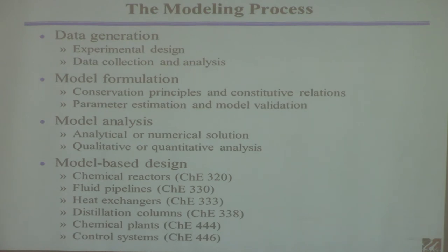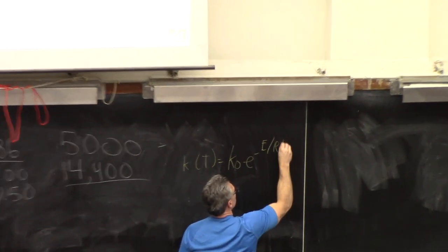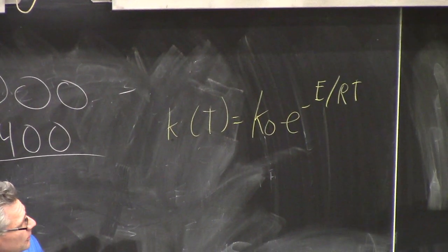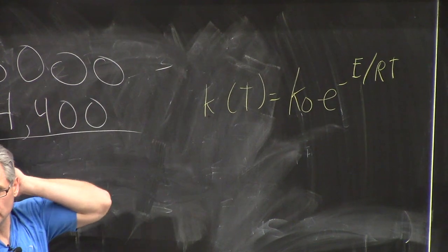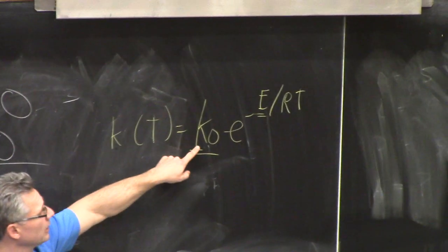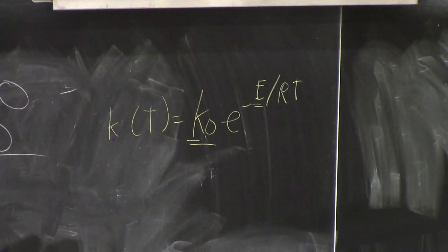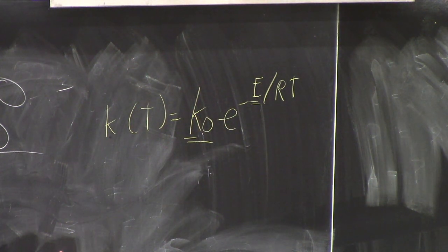For example, the Arrhenius equation — that's an equation for how reaction rate depends on temperature. It's a generally accepted constitutive relation. But it contains constants like the frequency factor and activation energy. If I give you a homework problem I'll give you those values, but if you work in a plant nobody gives you those — you have to get them from data by combining data and a model together.